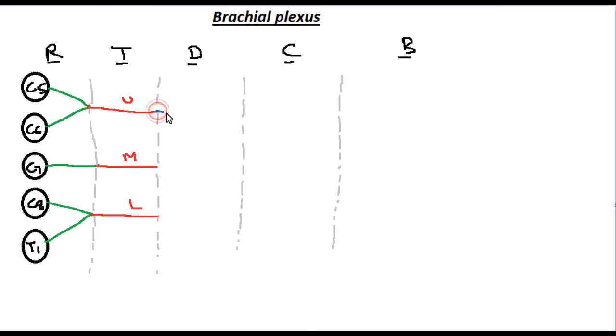Then these trunks will divide into two divisions, anterior and posterior division. You have three anterior and three posterior divisions. This is the anterior division. This is the posterior division of the middle trunk. The lower trunk also has anterior division and posterior division. Different colors you can use.